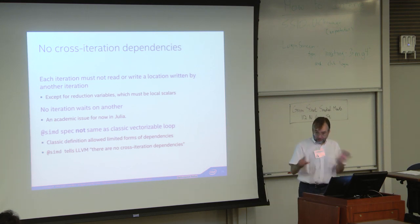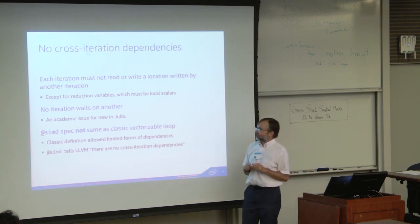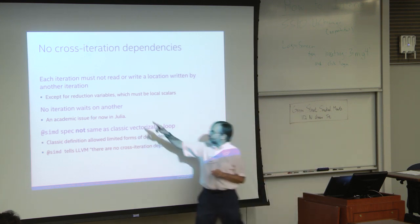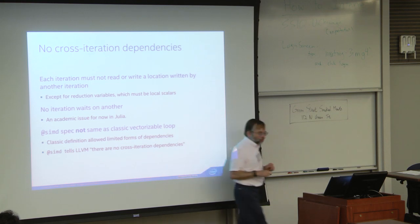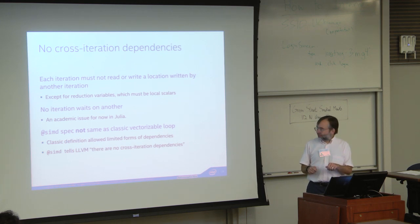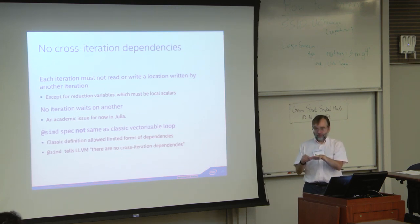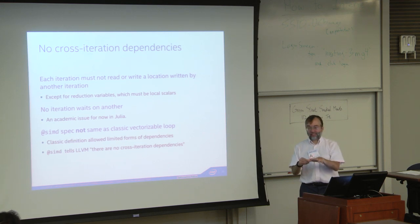One case where iterations can depend upon each other is the reduction variable — that's the special exception. Another rule: no iteration can wait on another. Because within a chunk, a group of iterations are marching in lockstep. You can't have one iteration acquire a lock while the others wait for that lock to be free — they're all marching along in lockstep, so if one has to wait, everybody waits.